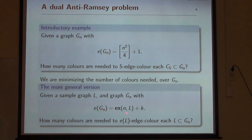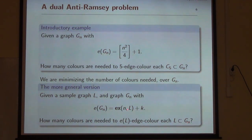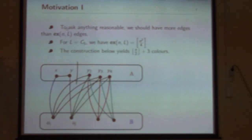You can ask the same question for many other sample graphs. If G_N is an n-vertex graph with slightly more than the extremal number for L edges — with some extra K, a small number — then the question is: how many colors do you need to color the edges of G_N so that each copy of L in it has e(L) colors? So all edges of each copy of C5 receive different colors.